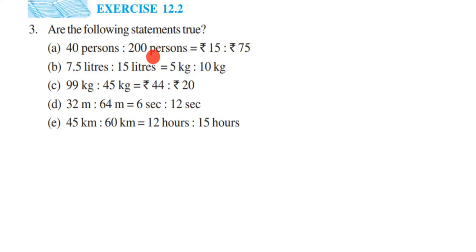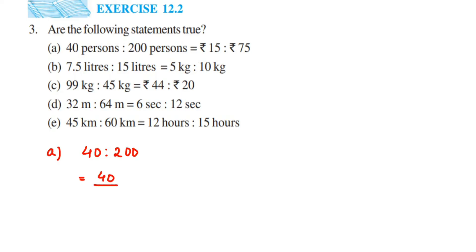To solve these questions, we're going to reduce the ratios into their lowest form and see if they're equal or not. The first question is 40% is to 200%. I'm not writing the units here because we don't usually write units in ratios. So 40 is to 200 — converting this into a fraction gives 40 by 200. Cancel the zeros: 4 by 20, and then in the 4 table, 4 ones are 4, 4 fives are 20, so this equals 1 by 5.